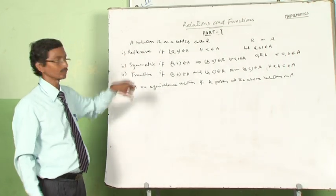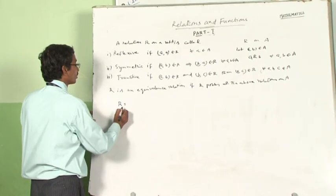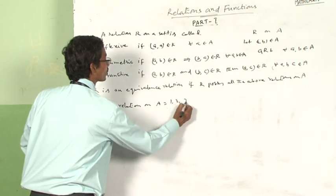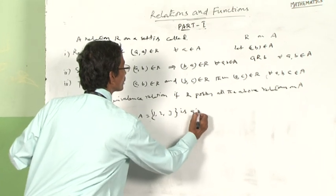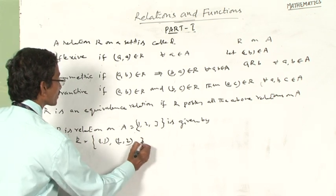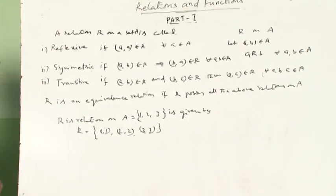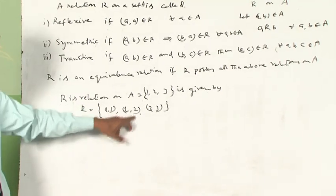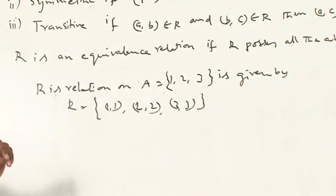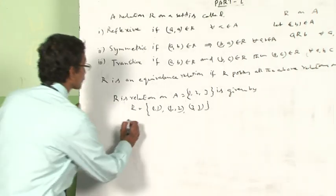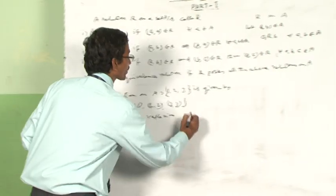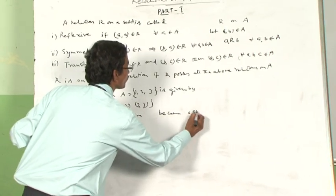I will give examples one by one. Suppose R is a relation and set A is equal to {1, 2, 3}, given by R = {(1,1), (2,2), (3,3)}. Here (1,1), (2,2), and (3,3) all belong to A cross A. We say that this relation R is a reflexive relation, because A comma A belongs to R for every A belonging to A.